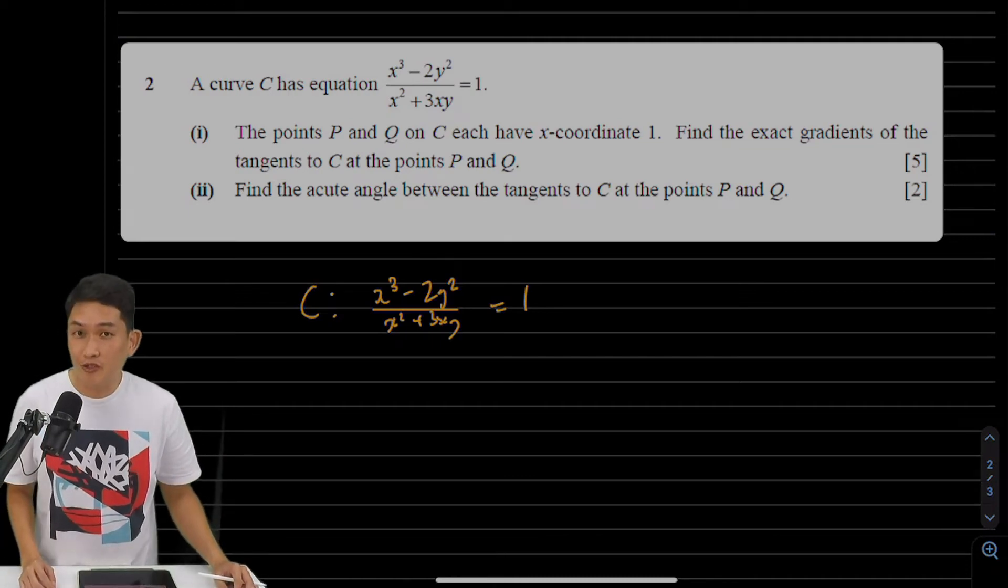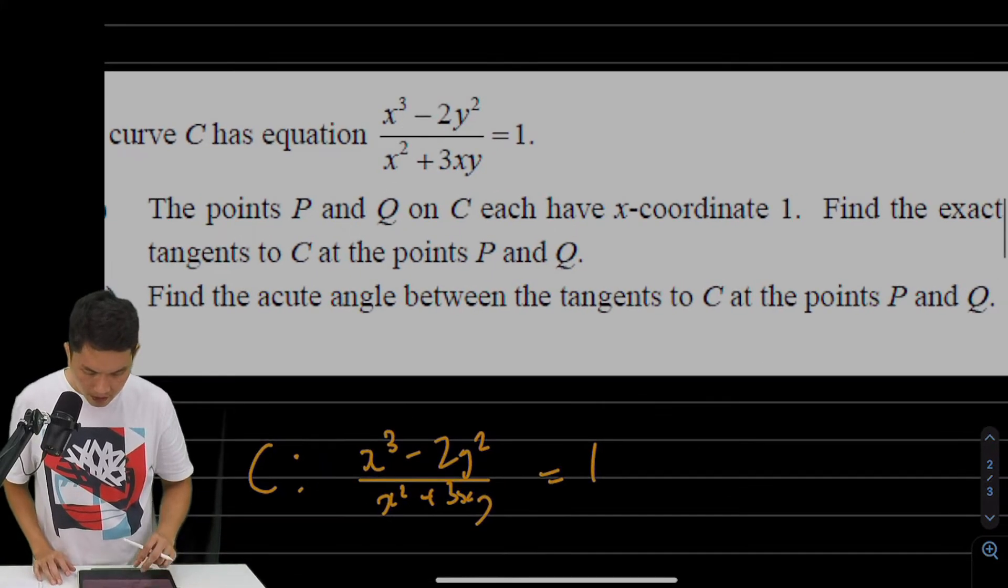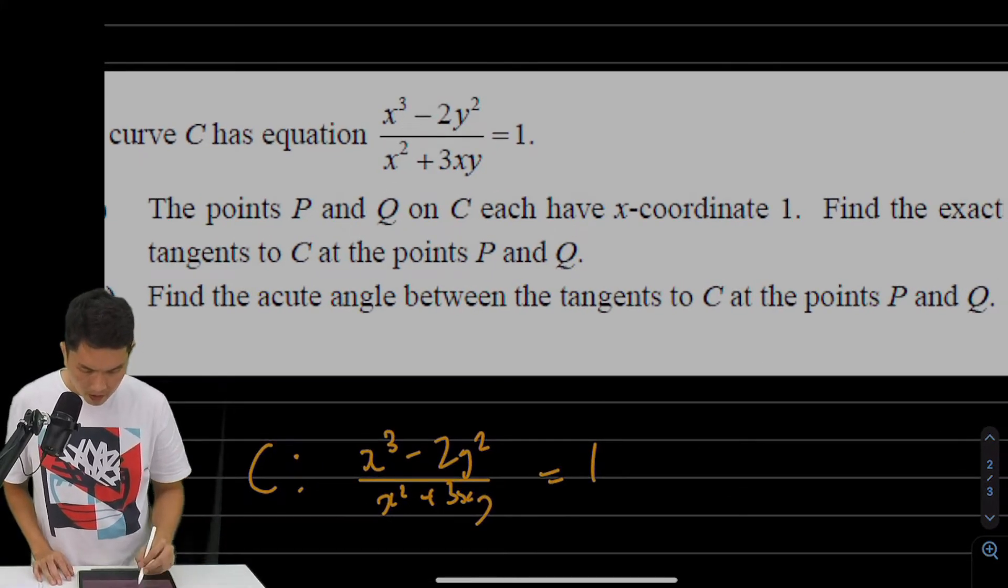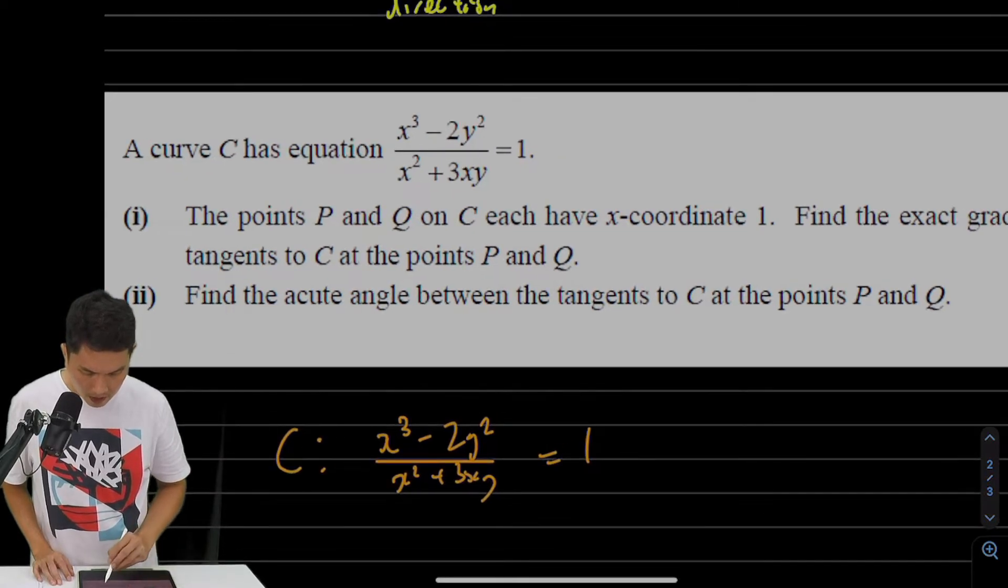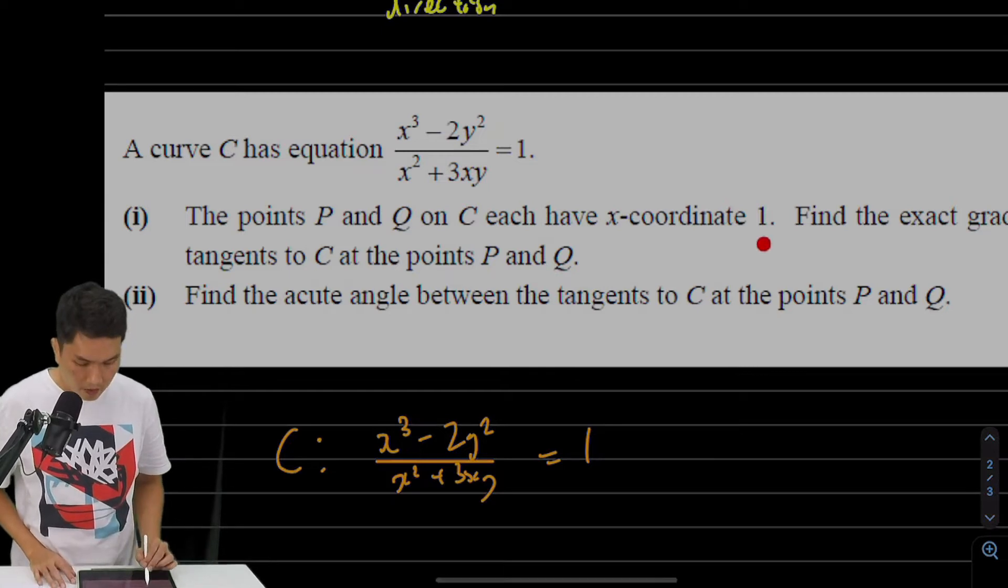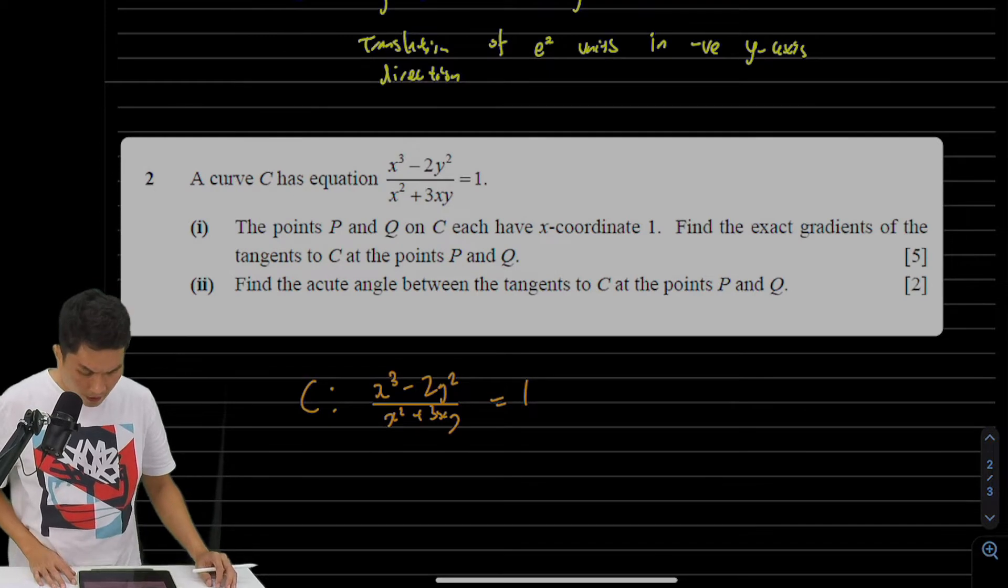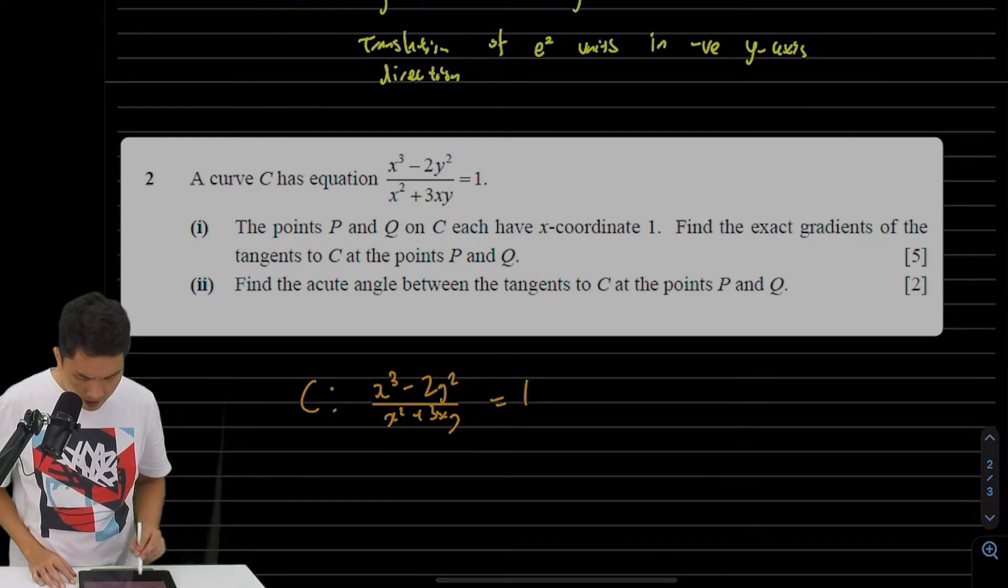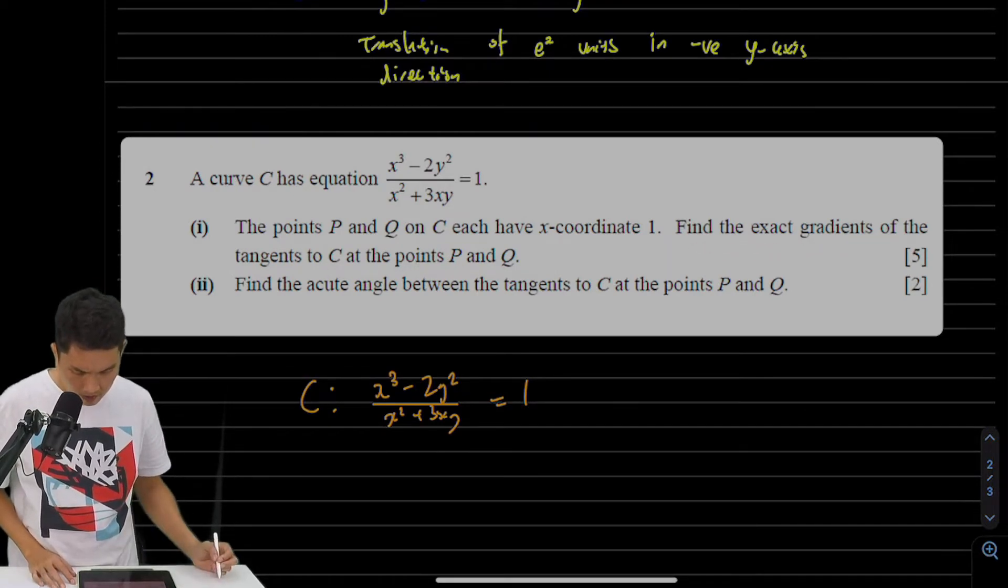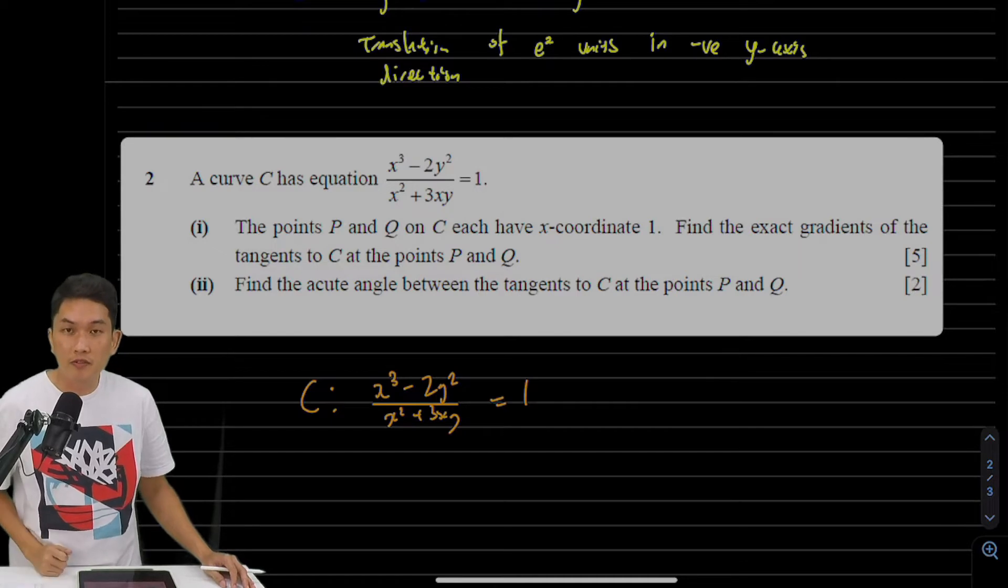Hello and welcome back to question 2. We are given a curve with this equation, and in part 1, there are two points on the curve, P and Q, both with x-coordinate 1. So this is not a one-to-one function. We need to find the exact gradients of the tangents to C at the points P and Q.